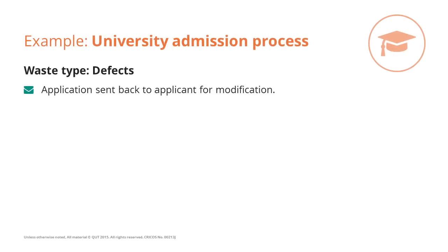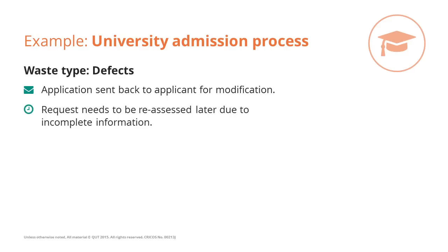In the context of the university admission process, we will find a lot of such defect waste — for example, when applications are sent back to the applicant for modification because of missing or inconsistent details, or when a request has been assessed but needs to be reassessed later because not all the required information was available the first time, or because the committee required some clarification.